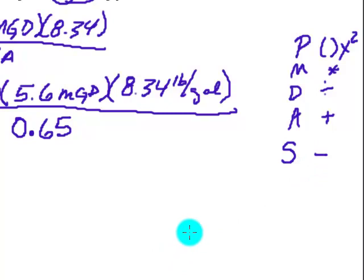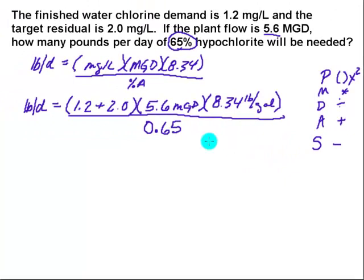Which means, anytime I can do things in this order, I must do them in that order. So I'm going to look at my equation, and I see here that I have something that can be done inside of a parentheses. So we're going to do that first. So I end up with pounds per day is equal to my 1.2 plus 2, that's 3.2 milligrams per liter of dose, total dose.